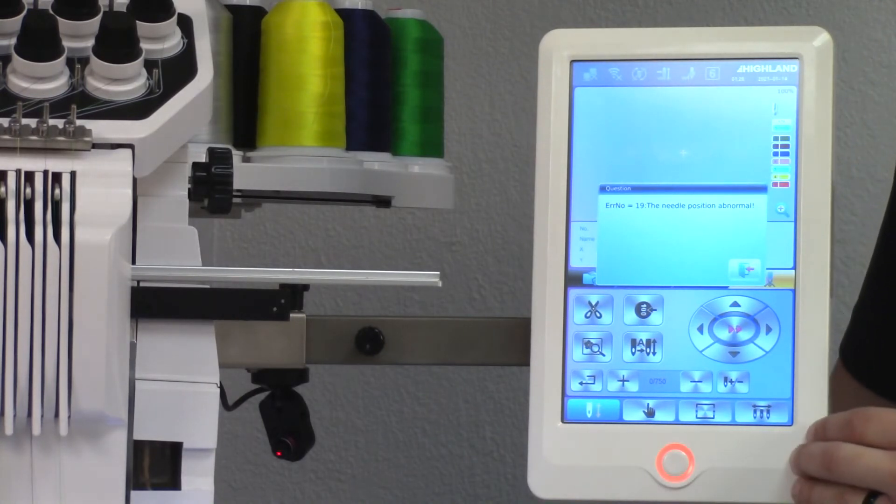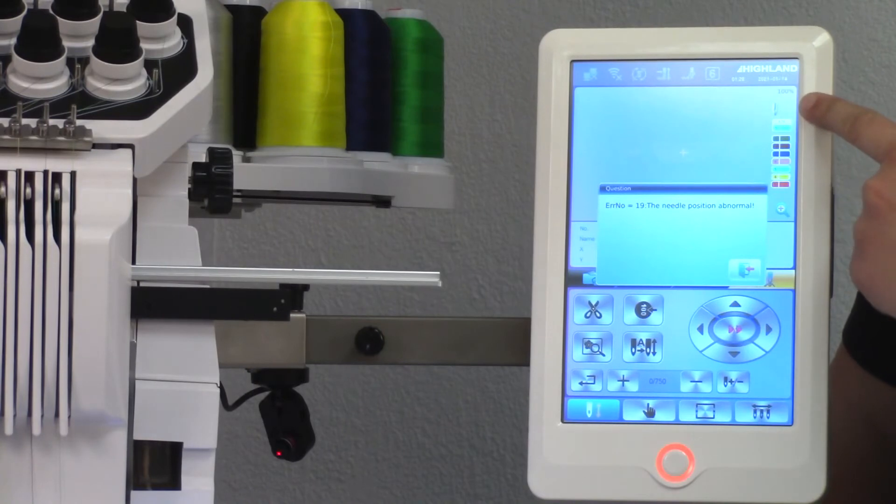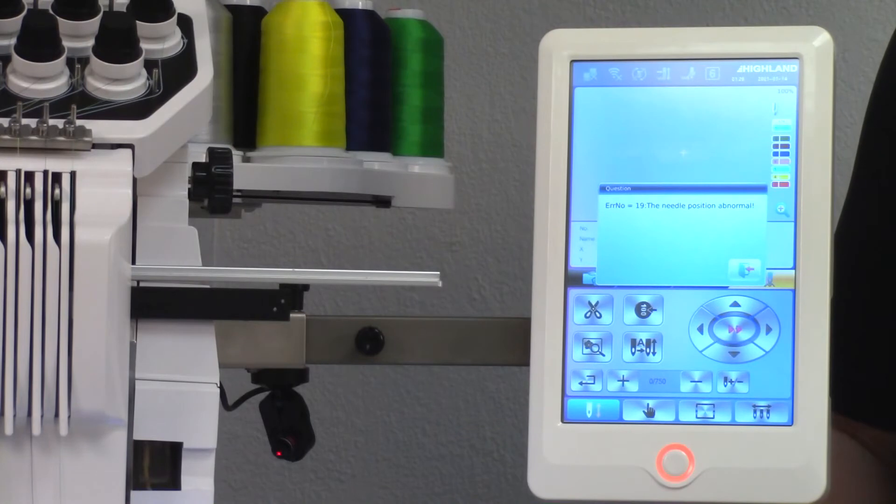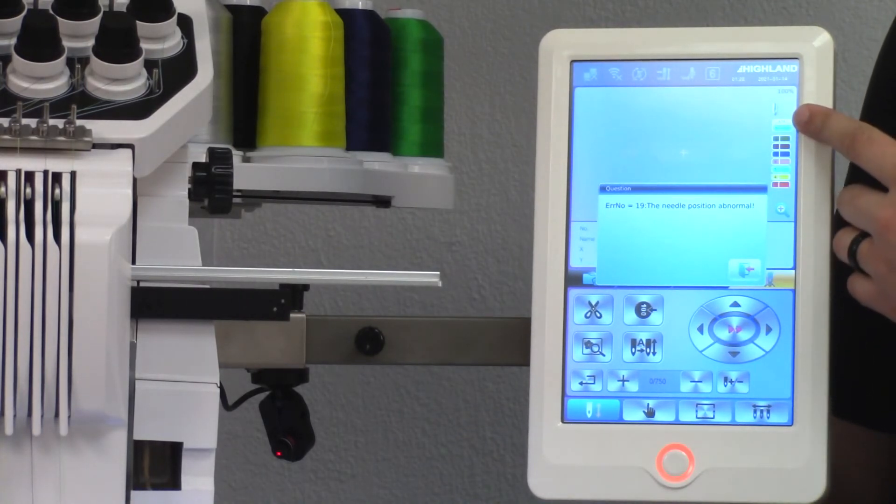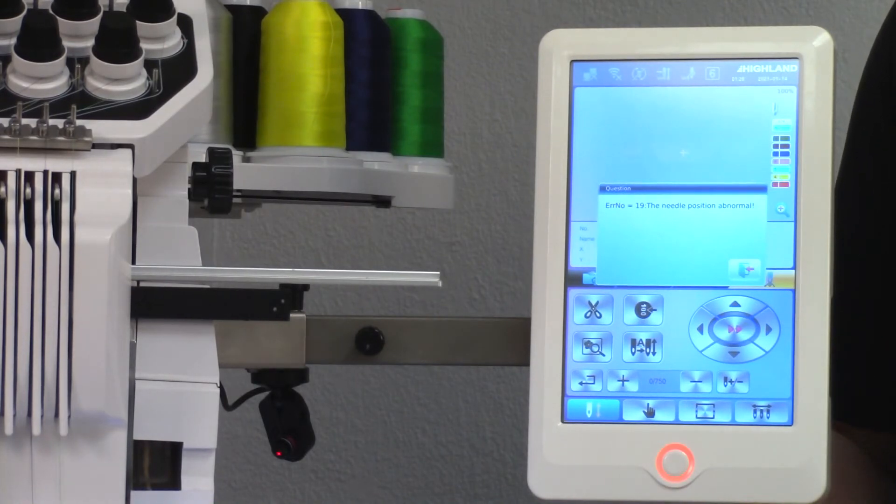When this error message pops up, you'll see in the upper right corner of your control panel a needle. And typically, if we have a needle that's in sewing position, we're going to have a number next to this needle. In our case, we don't, and that tells us that we don't have a needle in sewing position.